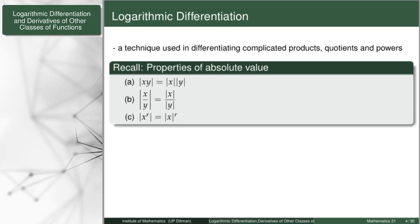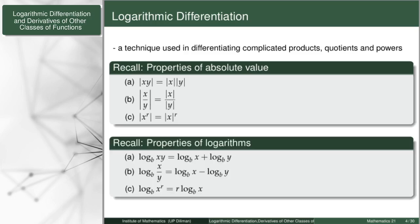As for the second step in logarithmic differentiation, we have, by the name, the logarithm. Unlike the absolute value, the logarithm, though it has a relationship between products, quotients, and powers, does not distribute over these operations but rather transforms them. The logarithm of a product becomes the sum of logarithms. The logarithm of a quotient is the difference of the logarithms, and the logarithm of an exponent is the exponent times the logarithm.